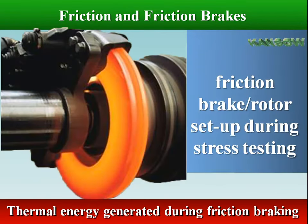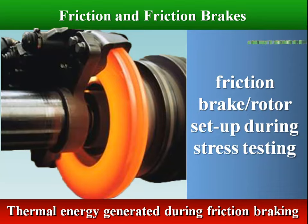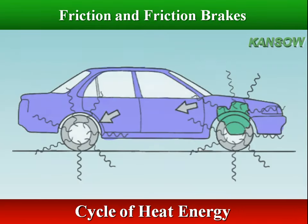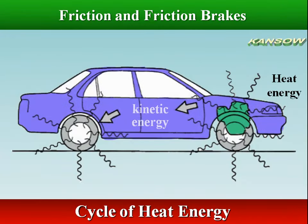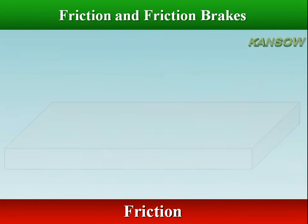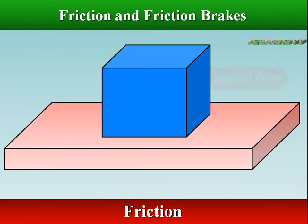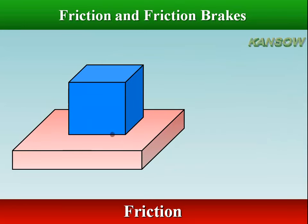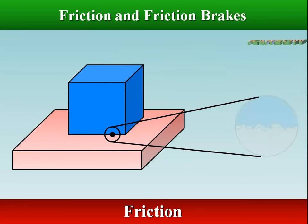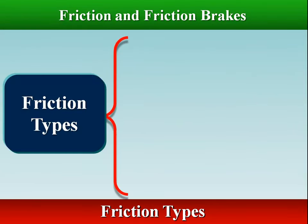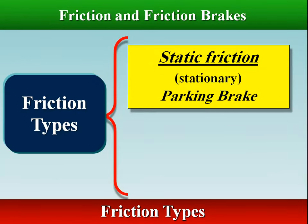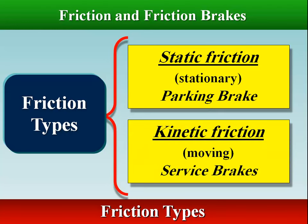Friction is a force that resists the movement of one surface over another, due to microscopic irregularities in even the smoothest of surfaces. There are two main types of friction: static friction, which is the resistance between non-moving surfaces and is present in parking brakes; and kinetic friction, which is the resistance between moving surfaces and is present in standard brakes.